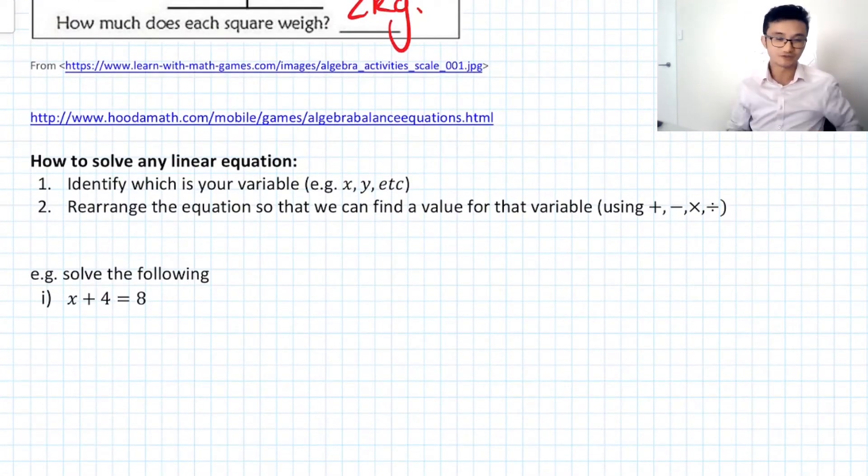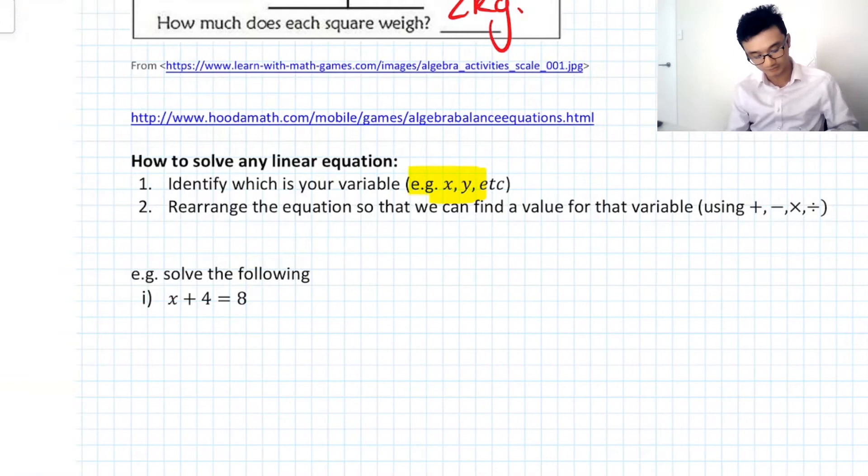Okay. So what are some steps? Well first identify what is your variable. So the thing you're trying to find. So x or y. It can be any other letter. And rearrange it so you can find a value for that variable. Now a lot of these you can work out in your head. But I want to get us familiar with this process of, okay, what am I actually doing? What operation am I actually doing here? For example,